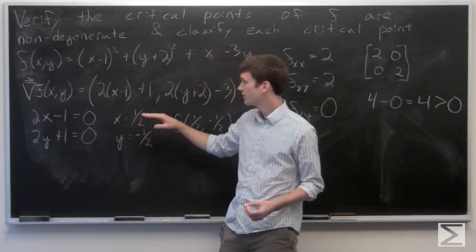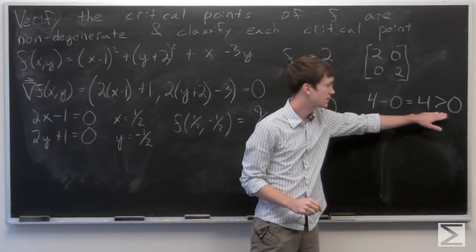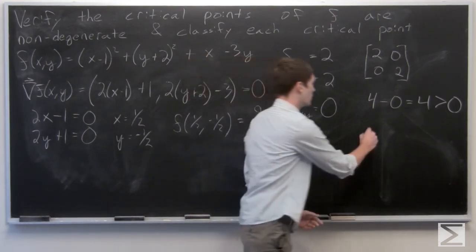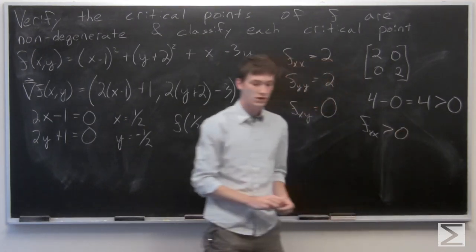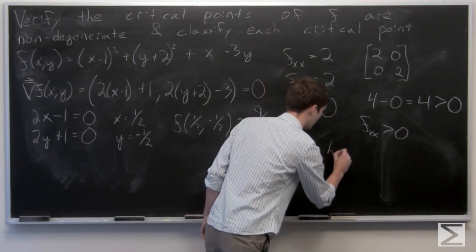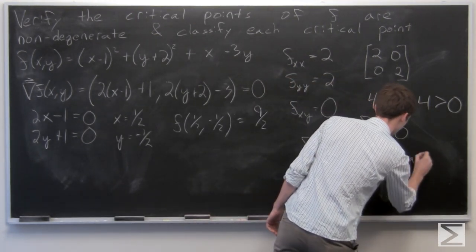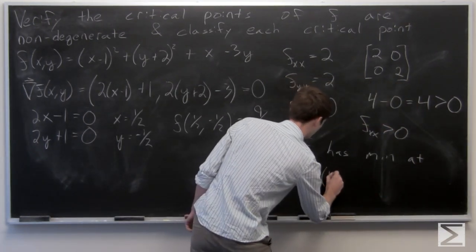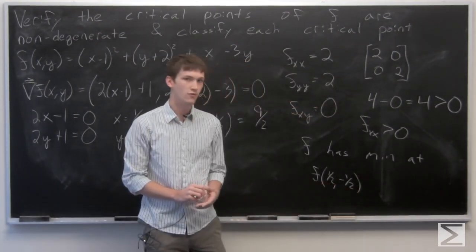And we want to classify them. So we know that our determinant of the Hessian matrix is more than 0 and that our f_xx is also more than 0, which tells us that f has a global minimum at (1/2, -1/2).